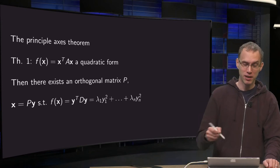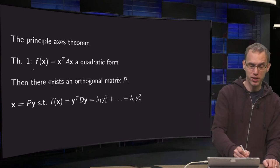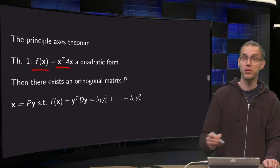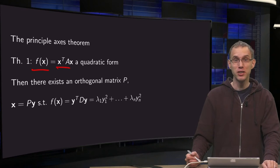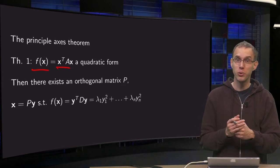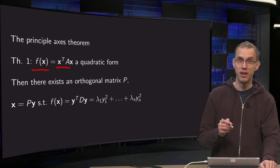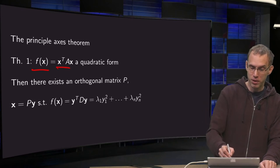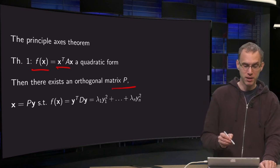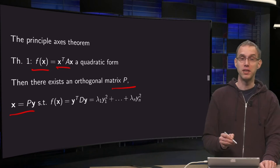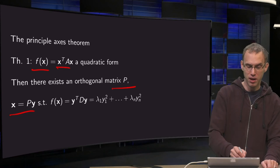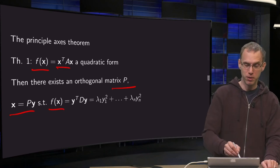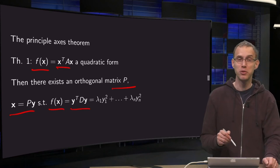So what's the idea? Our quadratic form f(x) is always of this form: x transpose times A times x. Now A is a symmetric matrix, so that means that we have an orthogonal diagonalization of A. We will be able to find an orthogonal matrix P such that x equals P times y, and then we will find with this transformation our quadratic form f(x) becomes y transpose times D times y.